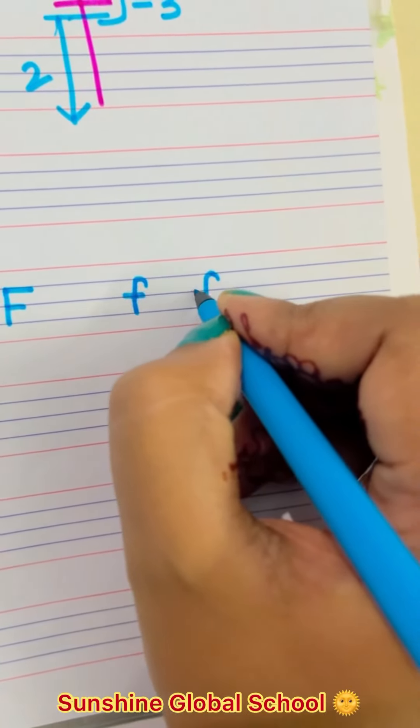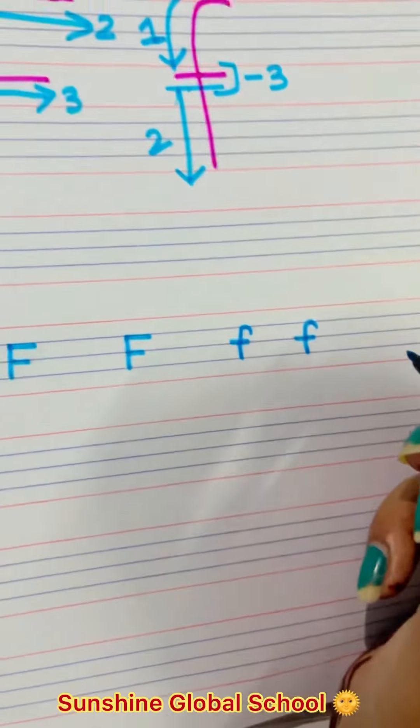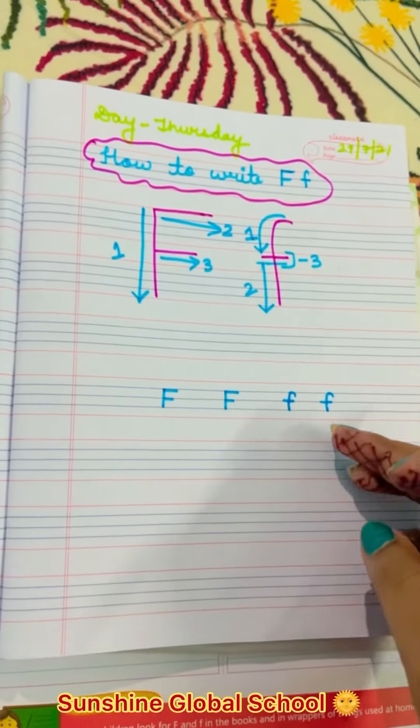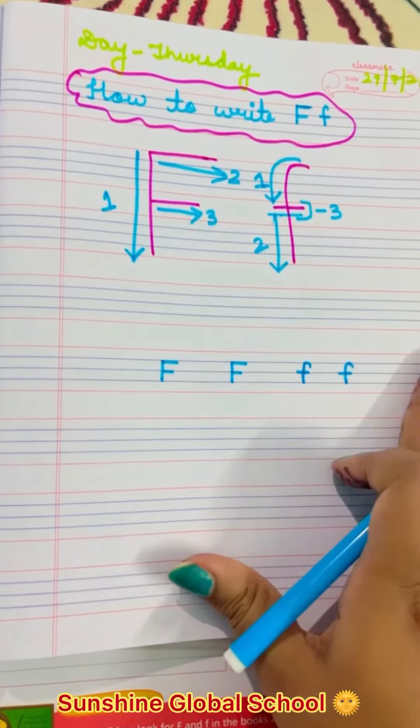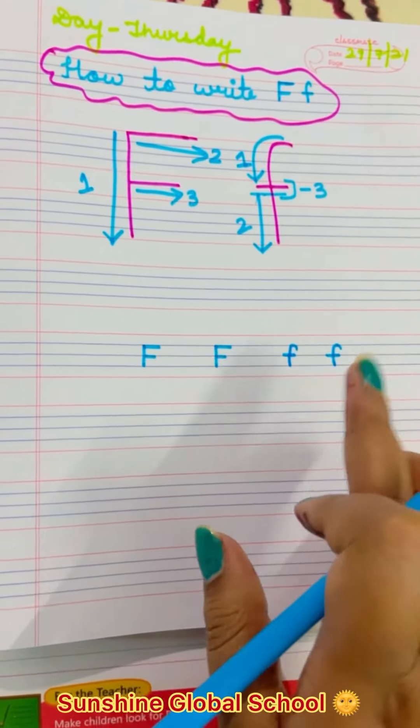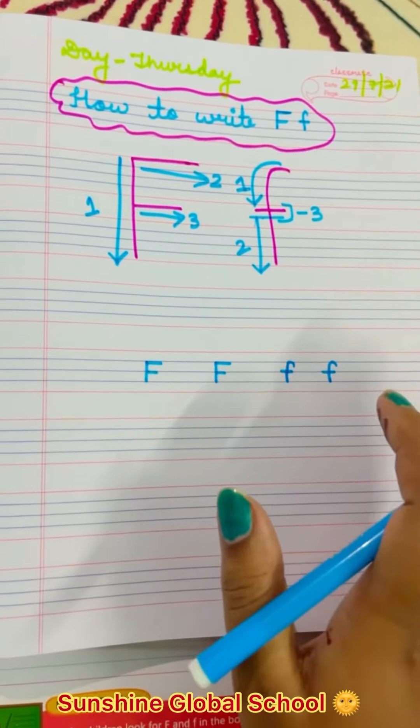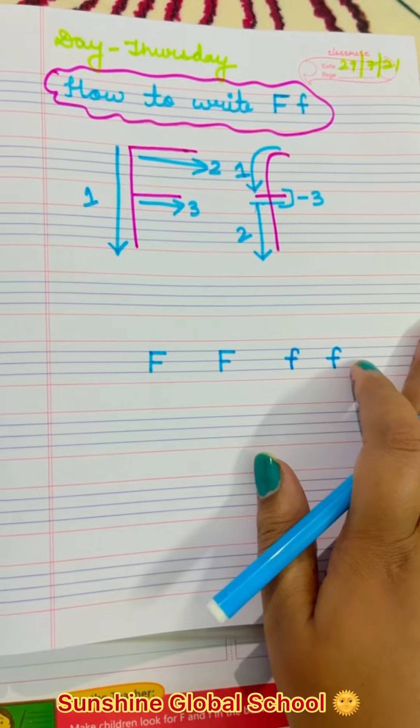Then standing line, and then small sleeping line. This is baby F. So you have to write mama F and baby F. Okay, do practice of it properly. Please, bye bye, take care.